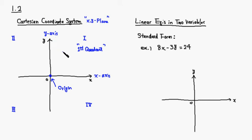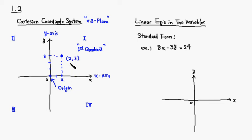We can use coordinates to describe the location of a point. For example, if you have a point with a value of 2 on the x-axis and around 3 on the y-axis, this point will have coordinate (2, 3). The first number is the reading from the x-axis, and it's called the x-coordinate. The second number is the reading from the y-axis, and it's called the y-coordinate.